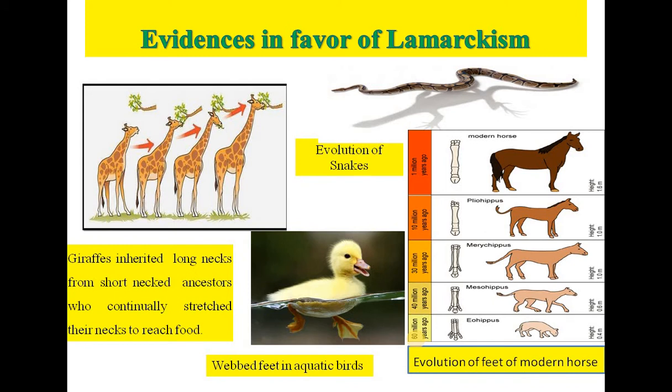The fourth example which favors Lamarckism is webbed feet in aquatic birds. Aquatic birds like ducks, swans, and gulls etc. have arisen from terrestrial ancestors by developing web between the toes for wading in water. This is an adaptation to an aquatic mode of life. The web developed because the ancestral forms had to spread their toes and stretch the skin between them to rest on the bottom. There is also reduction in size of wings due to their continuous disuse.